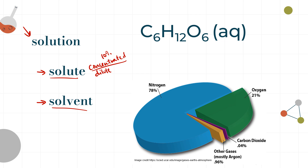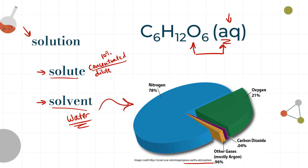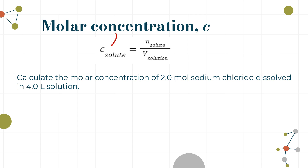Often our solvent in chemistry is water — it's so common that we have a state symbol for it: aq, meaning aqueous. Here we have a solution of glucose dissolved in water: aqueous glucose. However, water is not our only solvent. Gases can dissolve in other gases — in Earth's atmosphere, nitrogen is the most plentiful gas, so we consider it the solvent, and everything else is dissolved in the nitrogen.